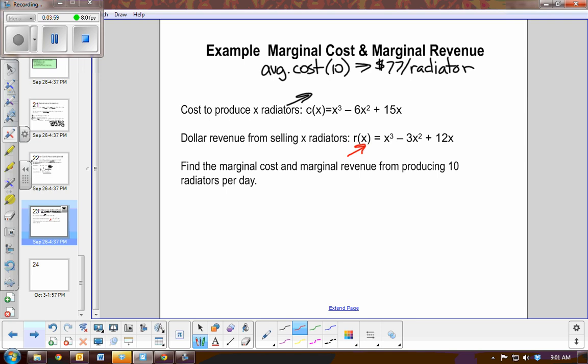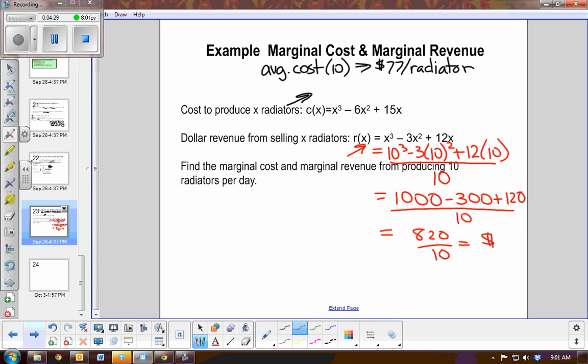So the revenue, I could find out what would be my revenue for making 10. We would just plug in 10³ - 3(10²) + 12(10). To find the average cost per radiator, we would divide by 10. Now I didn't do this one ahead of time. So it's 1,000 - 300 + 120 divided by 10. That's 720 divided by 10. So on average, I'm making $82 a radiator.